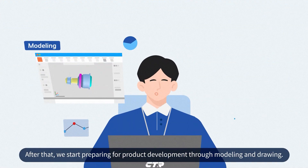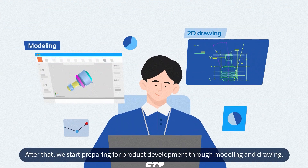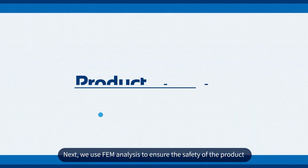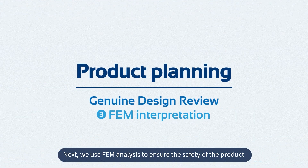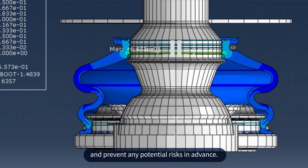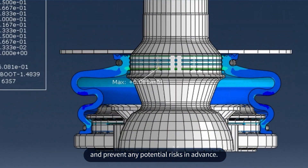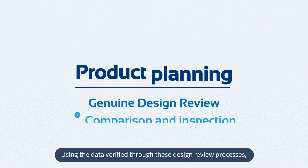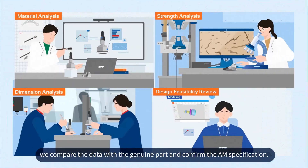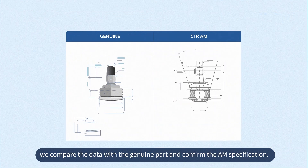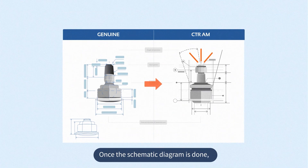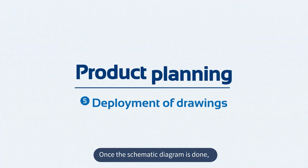After that, we start preparing for product development through modeling and drawing. Next, we use FEM analysis to ensure the safety of the product and prevent any potential risks in advance. Using the data verified through these design review processes, we compare the data with the genuine part and confirm the AM specification.